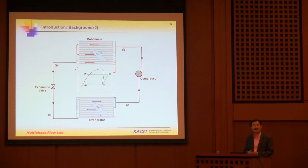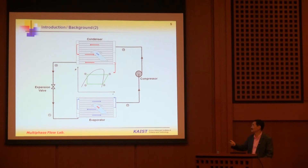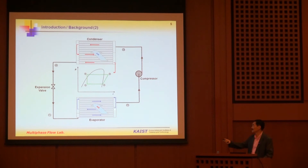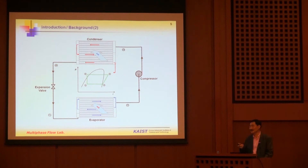Here is a typical refrigeration cycle in a pressure-enthalpy diagram with saturation curve and points one, two, three, and four. Between points one and two you have the evaporator. A two-phase mixture comes out from the expansion valve, is introduced to the header, and distributed into parallel channels, then through an intermediate header into another set of parallel channels. The mixture is converted into vapor — saturated or superheated — then goes through the compressor.